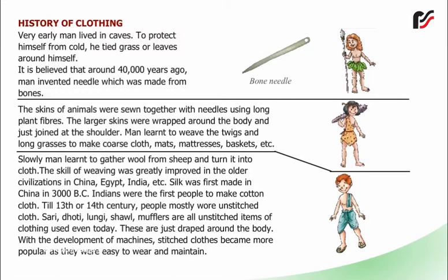The skill of weaving was greatly improved in the older civilizations in China, Egypt, India, etc. Silk was first made in China in 3000 BC. Indians were the first people to make cotton cloth. Till the 13th or 14th century, people mostly wore unstitched cloth.